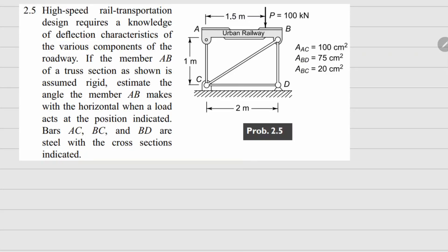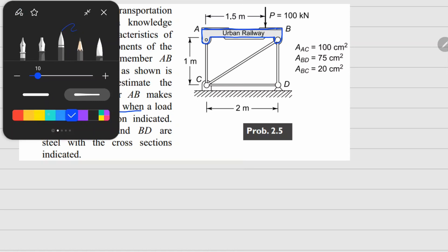This problem is 2.5. Here there is a design used in rail transportation, and there is this member AB which is given to you as rigid, meaning it is not going to deform. It is attached with this truss structure AC, and we need to figure out under these force conditions how much angle this AB is going to make with horizontal. This is the problem.